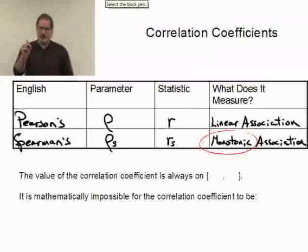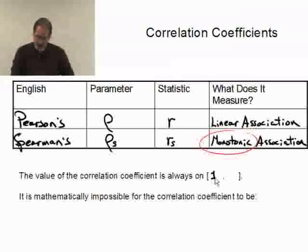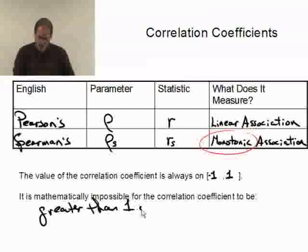Now, something that's extremely important to understand is that the value of the correlation coefficient, whether it's the parameter value or the statistic, it doesn't matter, it always will reside on negative 1 to 1. It is mathematically impossible for the correlation coefficient to be either greater than 1 or less than negative 1.